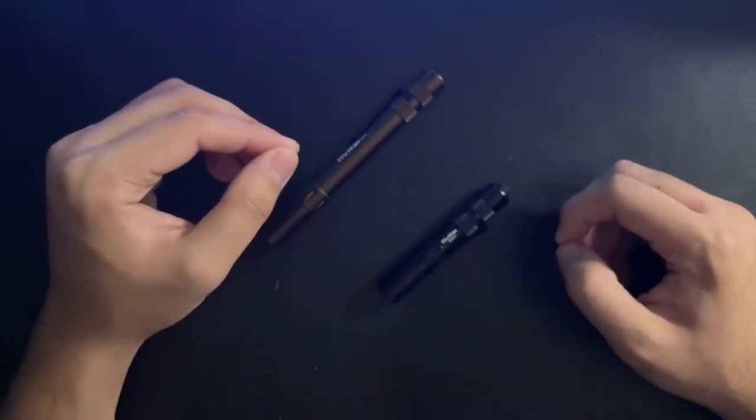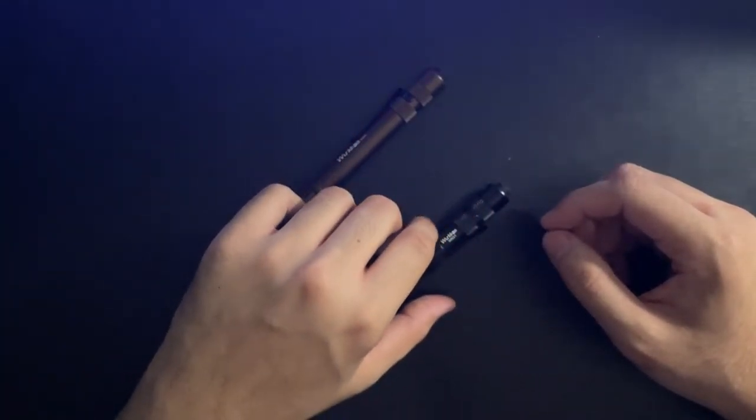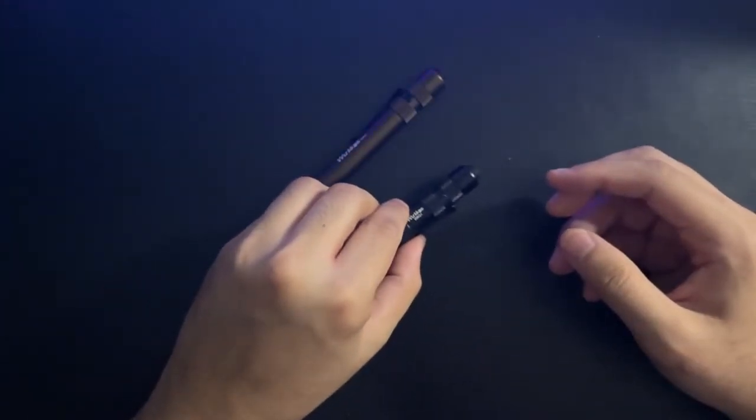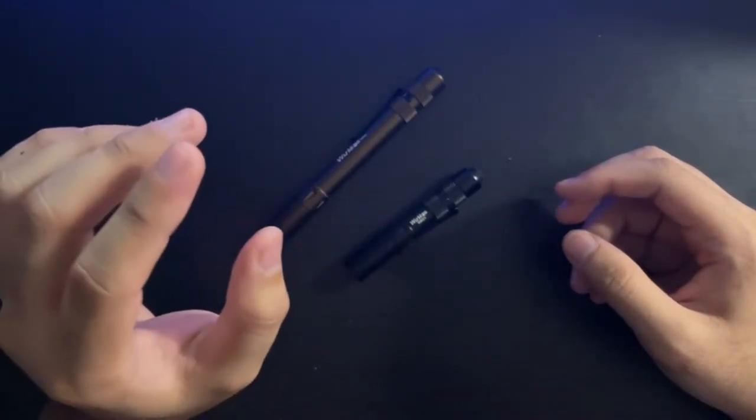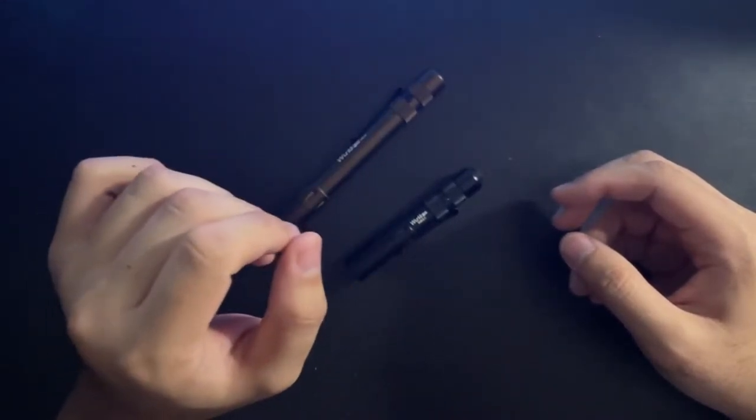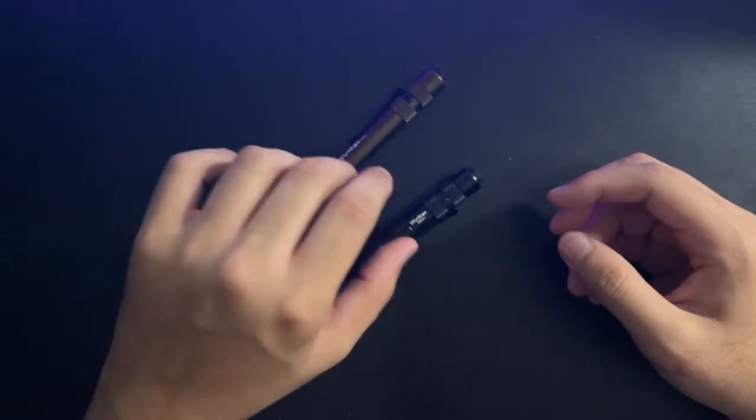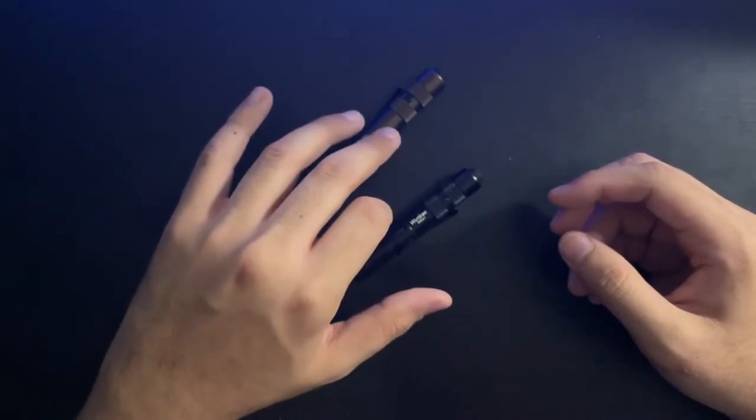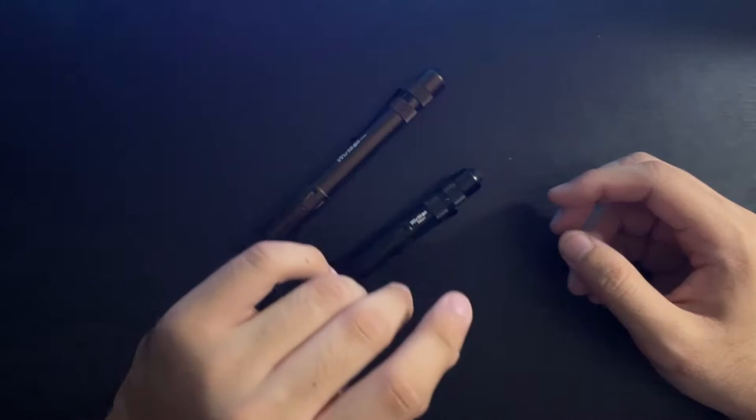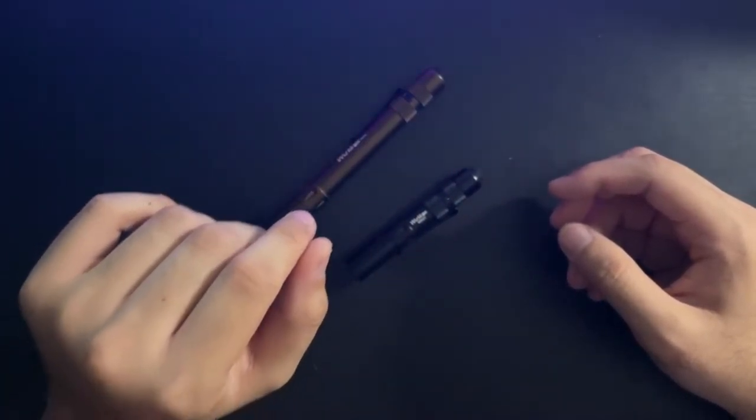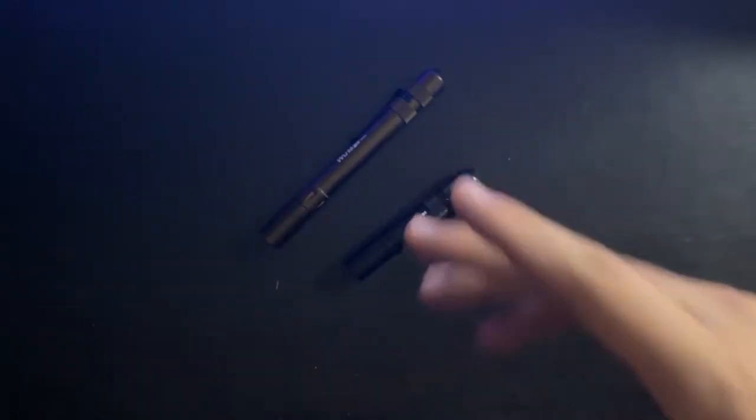For the price, these are some of the best AAA lights. They're only ten dollars each on Amazon. They come in a variety of colors, I know black and brown for sure. They also come in two tints, 4000K and 6000K. These are both 4000K.